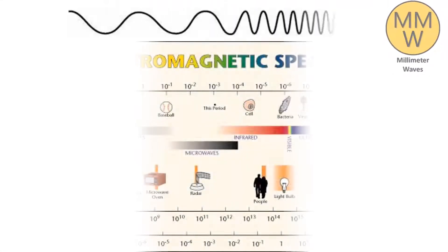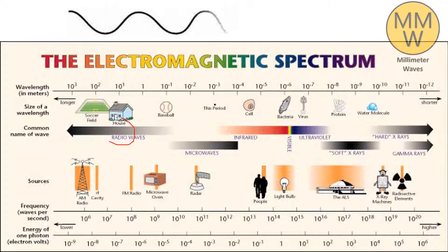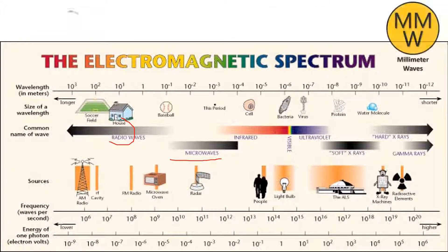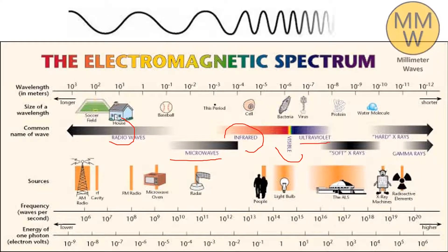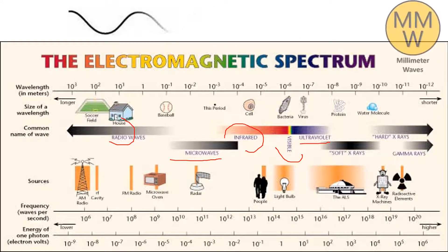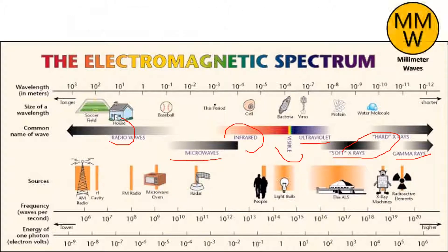In communication we use electromagnetic waves which are divided into 7 types: radio waves for instant communication, microwaves for data and heat, infrared waves which are invisible heat, visible light which makes us see, ultraviolet waves which are energetic light, X-rays which can penetrate our bodies, and gamma rays which are nuclear energy.